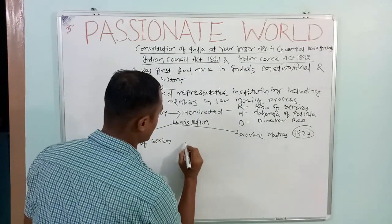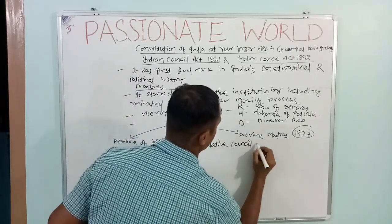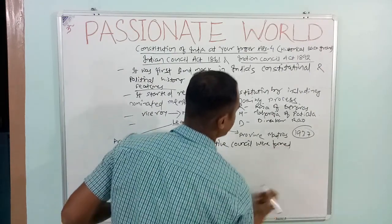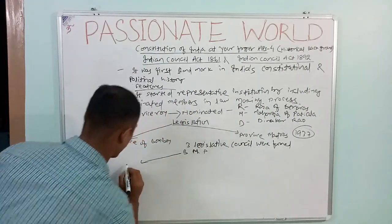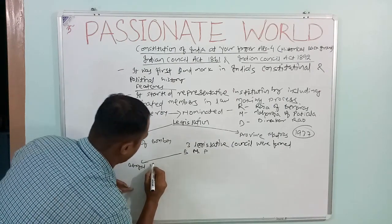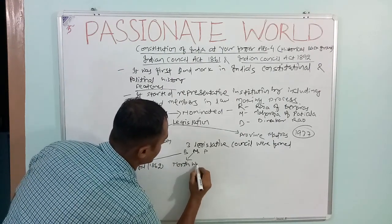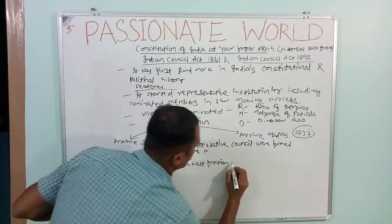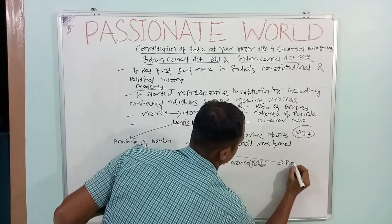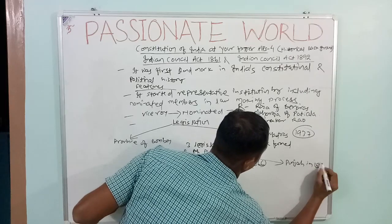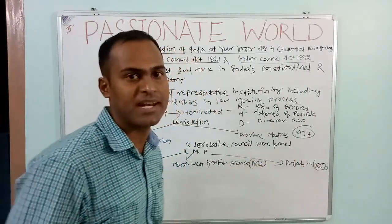After the devolution of legislation, three new legislative councils were formed. You can remember them using the mnemonic BNP — B stands for Bengal in 1862, N stands for North West Frontier Province in 1866, and P stands for Punjab in 1867.